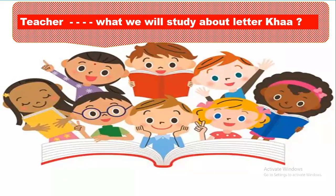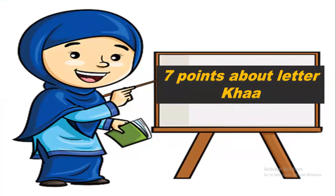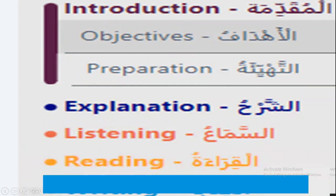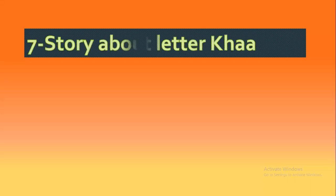We will study seven points about letter Kha. Number one: the objectives from this lesson. Number two: preparation. Number three: explanation. Number four: listening. Number five: reading. Number six: writing. Number seven: a story about letter Kha.